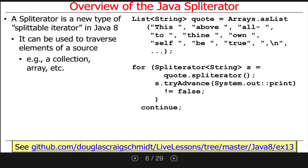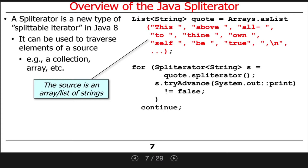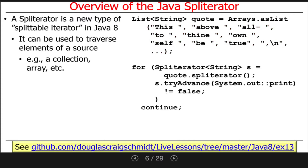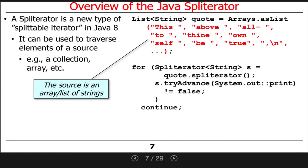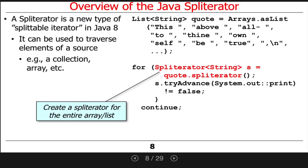The source could be a collection, a built-in array, whatever. So let's take a look at an example. I've got a list of strings, which is a quote from Hamlet: 'This above all, to thine own self be true,' and so on. That's the input. Now I'm going to say quote.spliterator — it's kind of like saying quote.iterator, but it gets a spliterator, not an iterator.